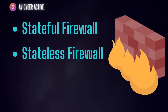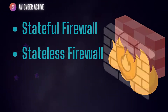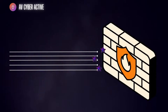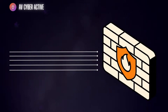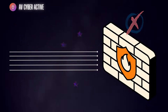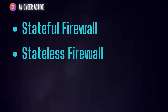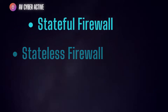Difference between stateful and stateless firewall. A firewall acts as an obstruction between your network and potential threats from the outside world. They help keep your data safe and secure. There are two primary types of firewall: stateful and stateless. Let's examine each one individually and explore their differences.